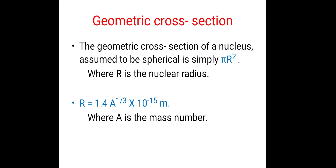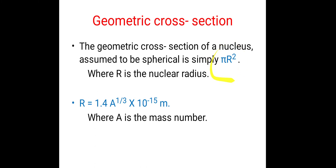Initially we should know what is meant by geometric cross-section. The geometric cross-section of a nucleus, assumed to be spherical, is simply π r². We know that the nucleus is spherical and its geometric cross-section is given by the formula π r², where r is the nuclear radius.